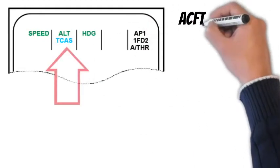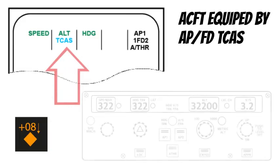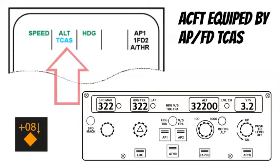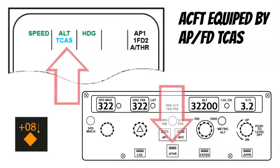If a TA is generated, the PF announces TCAS blue. If the Autothrust is off, the PF should request the PM to set it on. The PF must not initiate an evasive maneuver only based on a TA.